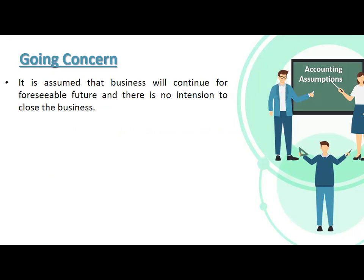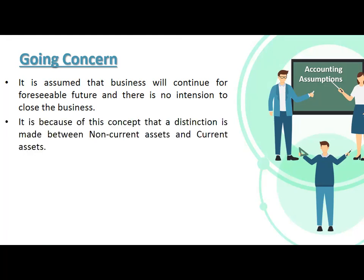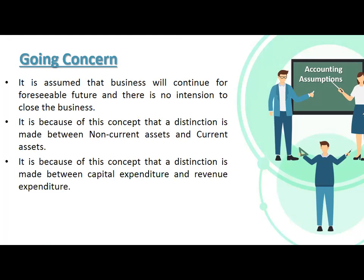Going concern: it is assumed that a business will continue for the foreseeable future and there is no intention to close the business. If you intend to shut down the business, you cannot take long-term benefits. This concept is why a distinction is made between non-current assets and current assets. If long-term benefits of more than one year are not expected, assets cannot be called non-current assets; they would be recorded as current assets. Because of this concept, a distinction is made between capital expenditure and revenue expenditure.